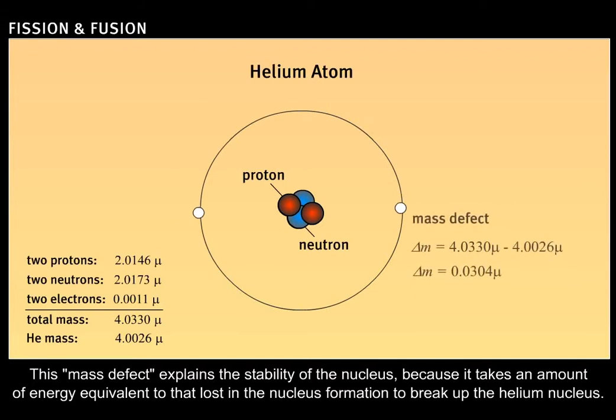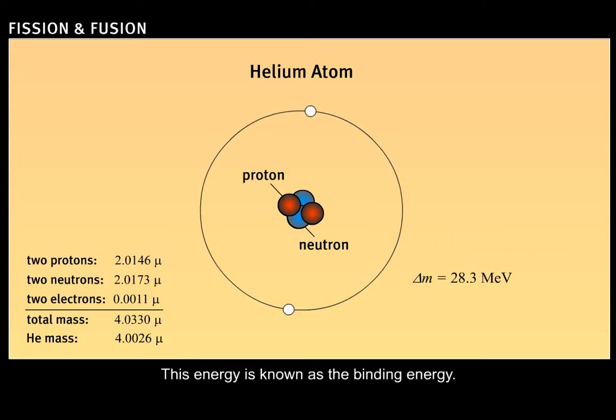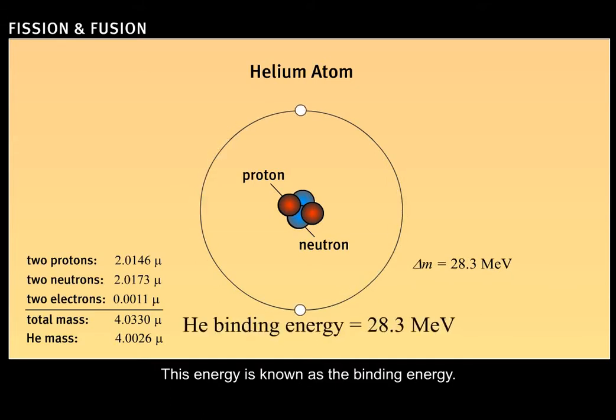This mass defect explains the stability of the nucleus, because it takes an amount of energy equivalent to that lost in the nucleus formation to break up the helium nucleus. This energy is known as the binding energy.